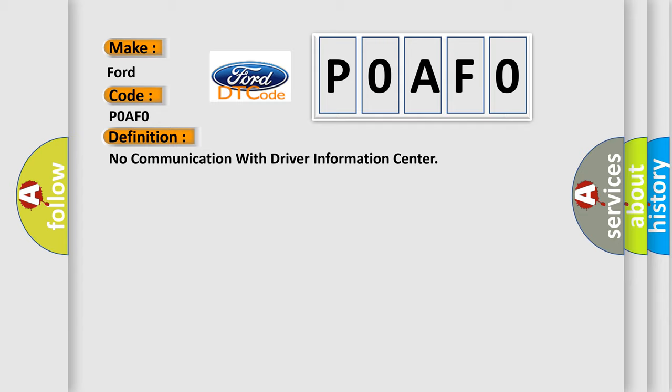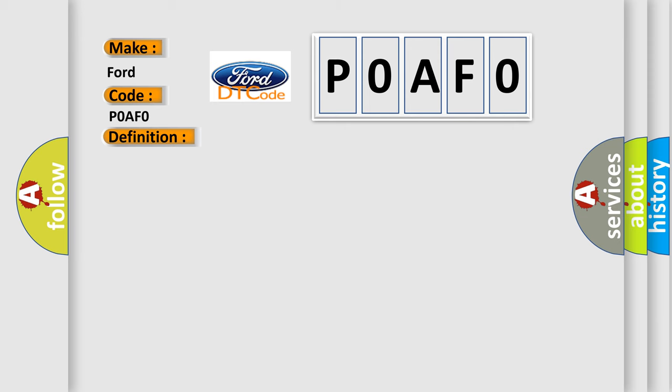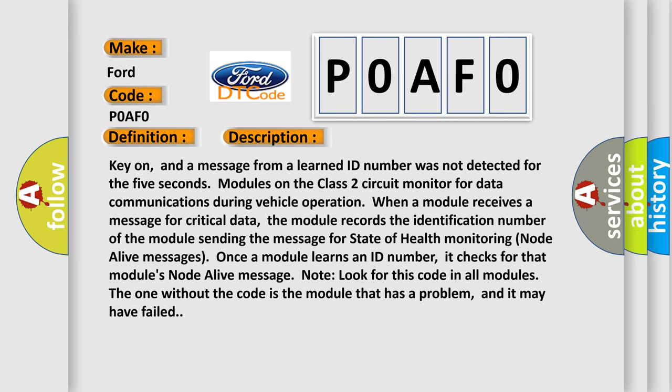The basic definition is: No communication with driver information center. Key on, and a message from a learned ID number was not detected for 5 seconds — modules on the Class 2 circuit monitor for data communications during vehicle operation. When a module receives a message for critical data, it records the identification number of the sending module for state-of-health monitoring (node alive messages). Once a module learns an ID number, it checks for that module's node alive message. Note: look for this code in all modules — the one without the code is the module that has a problem and may have failed.